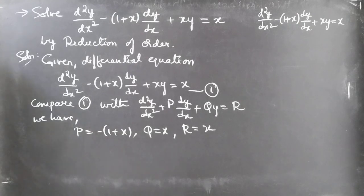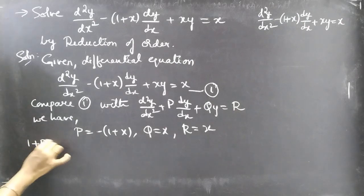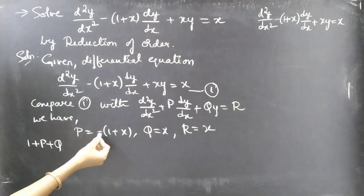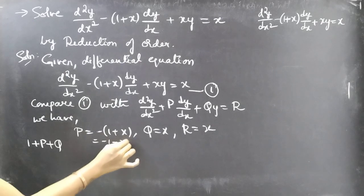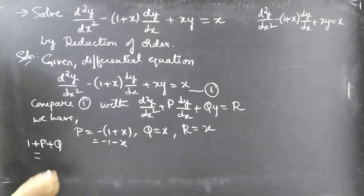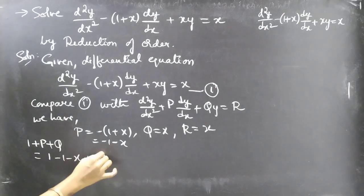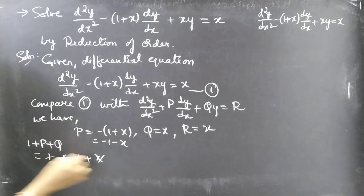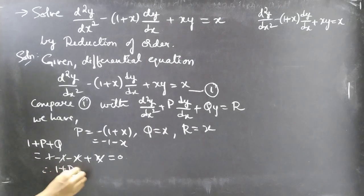Now we have to find a part of the complementary function. We'll try the condition 1 + P + Q. Here P is minus 1 minus x, and Q is x. So 1 + P + Q gives us: 1 plus (minus 1 minus x) plus x, which equals plus x minus x minus 1 plus 1, everything cancels and equals 0. Therefore 1 + P + Q = 0.